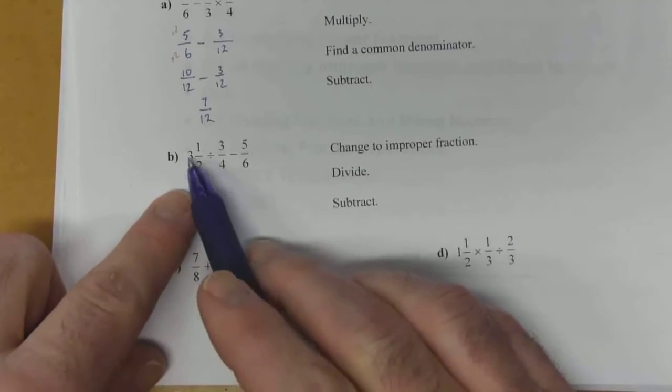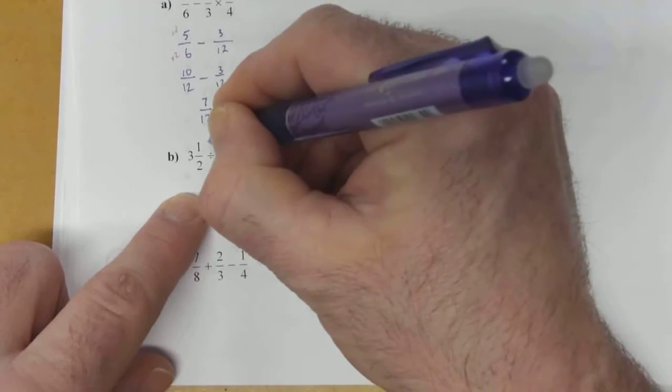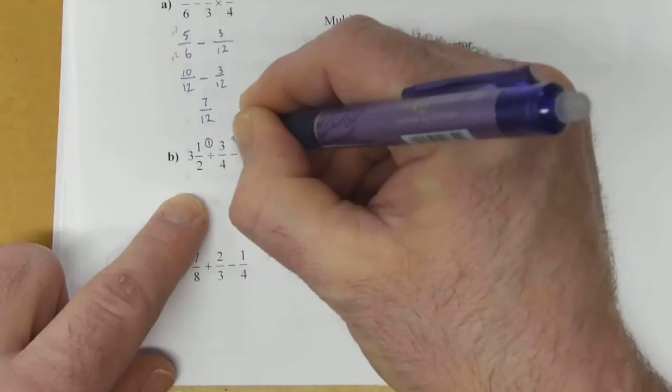So BEDMAS comes into play a lot here. The next part. 3 and a half divided by 3 quarters minus 5/6.